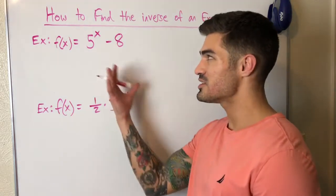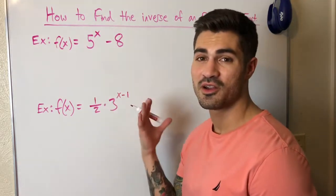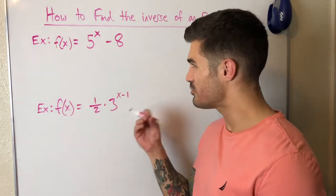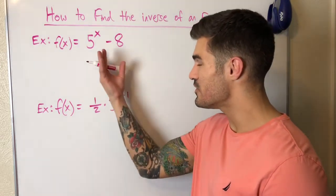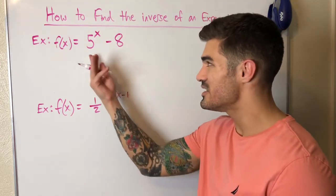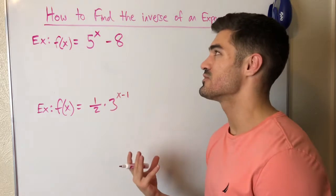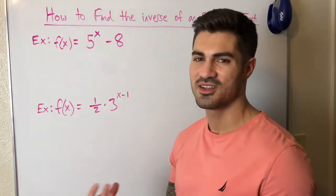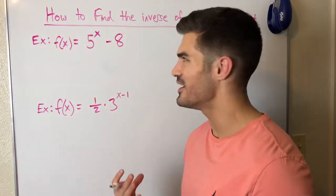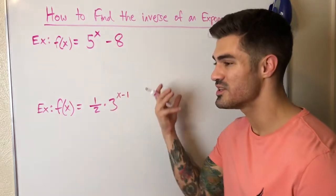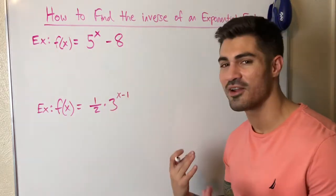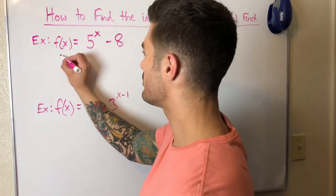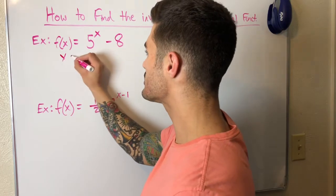We can expect some kind of logarithm in our inverse function, but we want to be precise and find the exact function. It basically undoes everything being done to x — if I plug this function into its inverse, I just get x when I simplify.